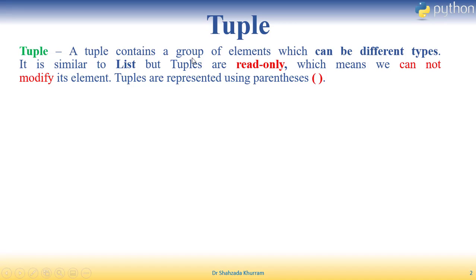A tuple contains a group of elements which can be of different types. Tuple ke andar bhi hum group of elements create karte hain aur yeh different data types ke bhi ho sakte hain. It is similar to a list but tuples are read only, which means we cannot modify its elements. Tuples are represented using parentheses.